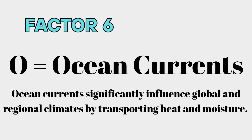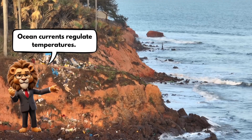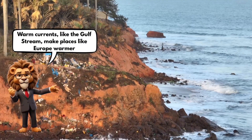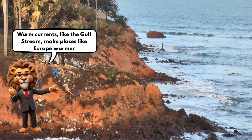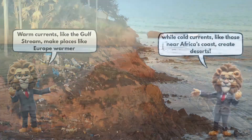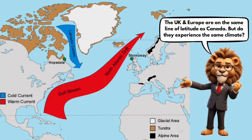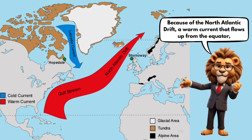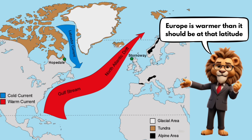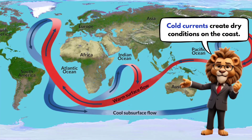Factor six: ocean currents. Ocean currents regulate temperatures. Warm currents like the Gulf Stream make places like Europe warmer, while cold currents like those near Africa's coast create deserts. The UK and Europe are on the same line of latitude as Canada, but because of the North Atlantic Drift — a warm current that flows up from the equator — Europe is warmer than it should be at that latitude. Cold currents create dry conditions on the coast; warm currents create wet conditions on the coast.